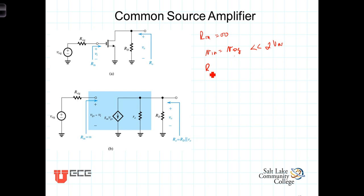The output resistance, capital R0, is seen or is determined by deactivating the source and then looking back into the output. In other words, the output resistance is just the Thevenin resistance for the amplifier. We've determined that by deactivating the source and looking back in.